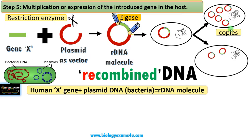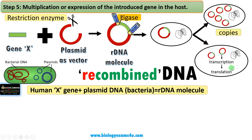The second intention is to produce the product encoded by that gene — that is, this gene is transcribed and translated to form the protein inside the bacterium. Bacteria acts just like a biofactory, producing the product.